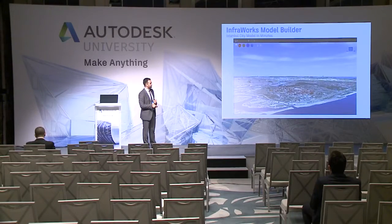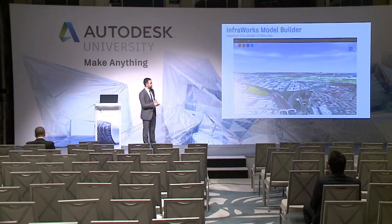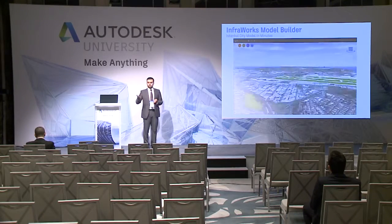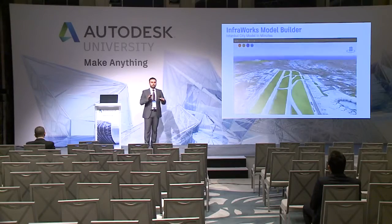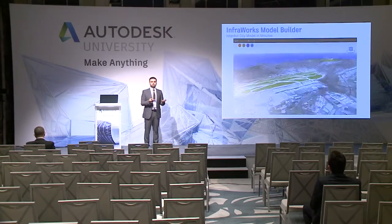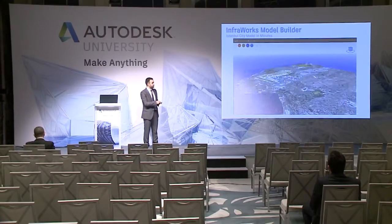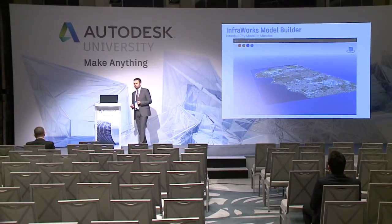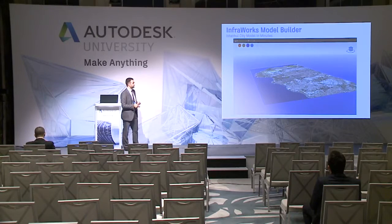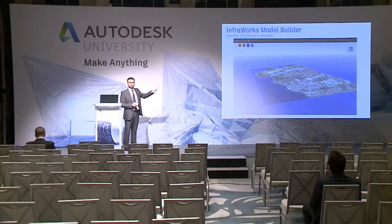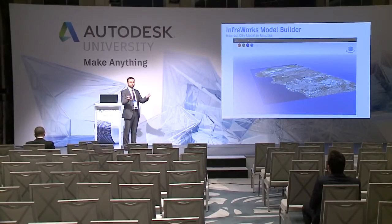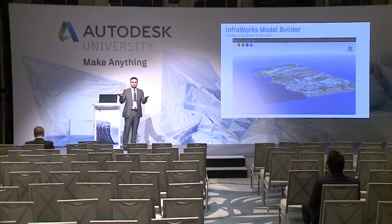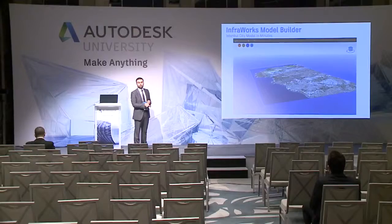Then you have that model in 3D — you have the buildings, the roads, the terrain. As my colleague Salvatore mentioned, the accuracy varies depending on the quality of data, but this is pretty much good for conceptual design. You're getting this free of charge from InfraWorks up to 200 square kilometers. You can actually create multiple models to cover a whole area like Istanbul and merge those together — up to 2,000 or 3,000 square kilometers with no problem.